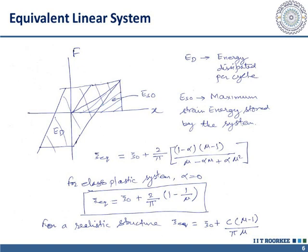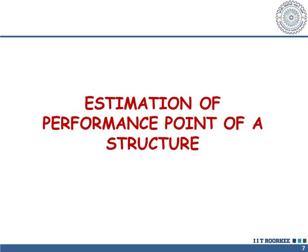For a bilinear load-displacement behavior, the hysteretic loop is a parallelogram; E_d is the total area of this parallelogram, and E_s0 is the area under the secant line (the triangular portion). Using these, ξ_eq = ξ₀ + (2/π)·(1 - 1/μ) for the ideal case. However, the real hysteretic loop has stiffness degradation and pinching, which reduces E_d. A more general relationship is ξ_eq = ξ₀ + C·(μ-1)/(μπ), where the constant C = 2 for the ideal case but is less than 2 for degrading structures.